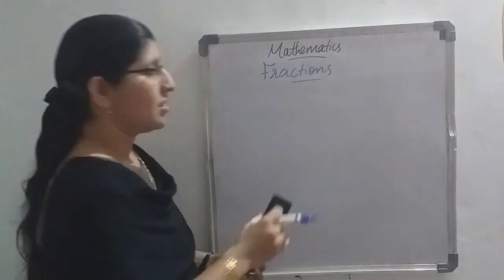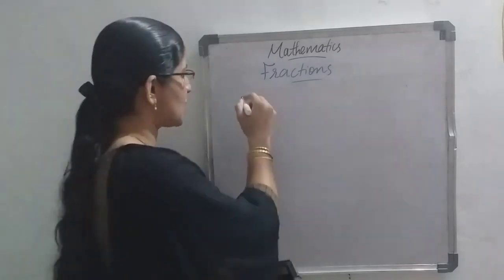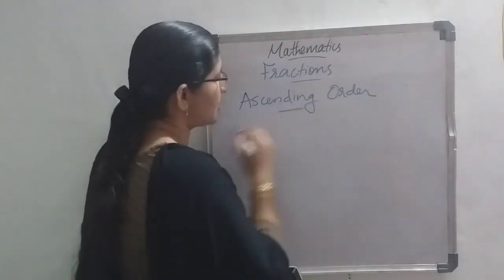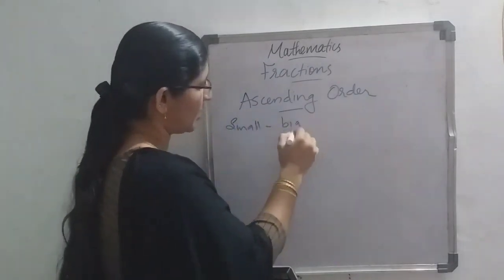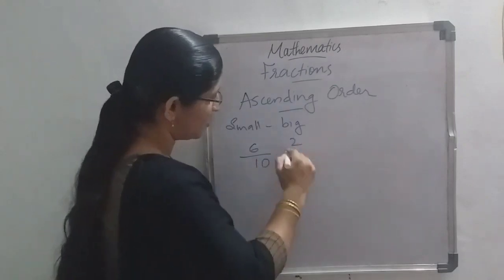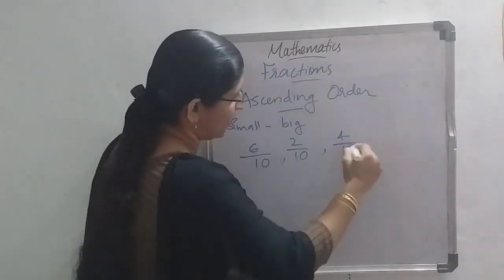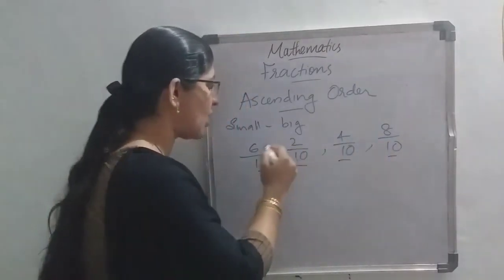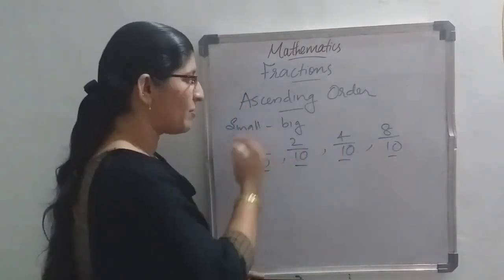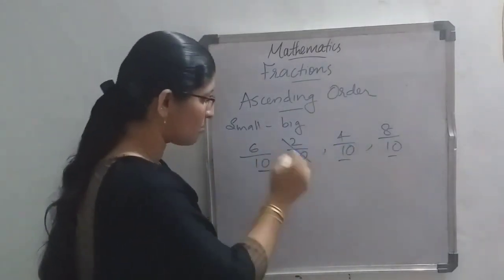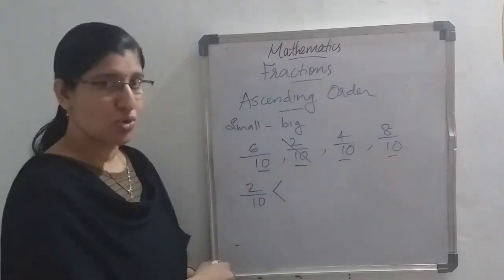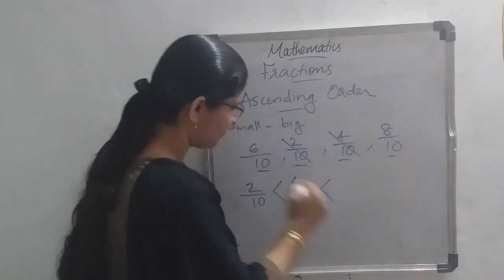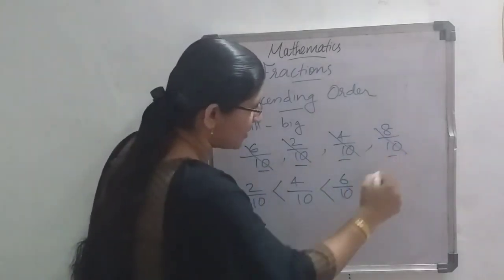You can write the descending and ascending order the same way. Ascending order means small to big. For example: 6 by 10, 2 by 10, 4 by 10, 8 by 10 — arrange in ascending order. All denominators are the same, so compare the numerators. The smallest is 2 by 10, then 4 by 10, then 6 by 10, and last 8 by 10.